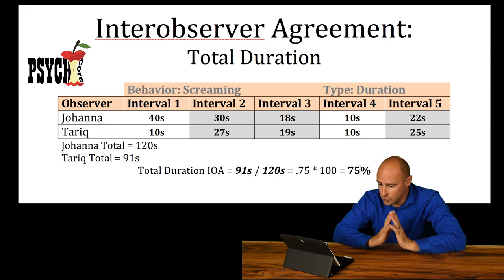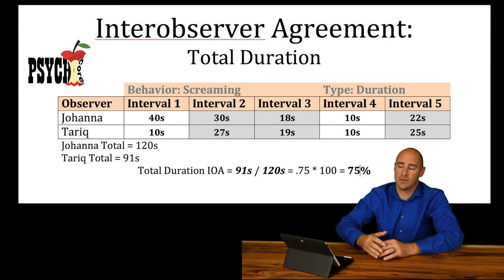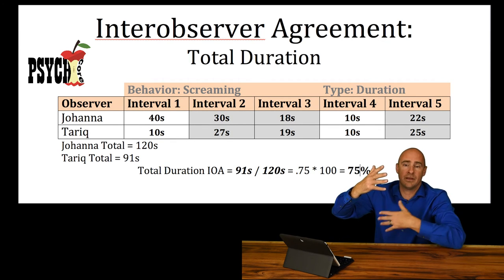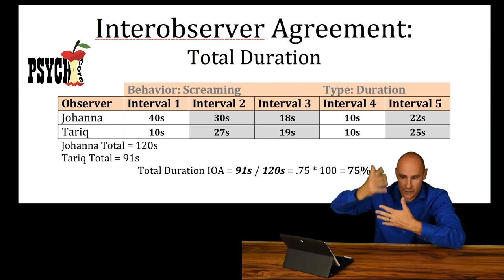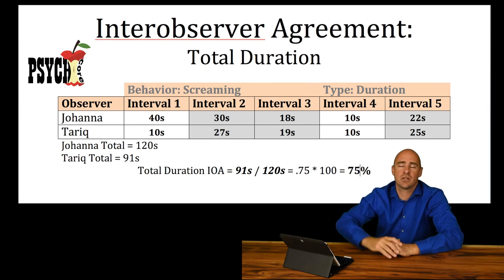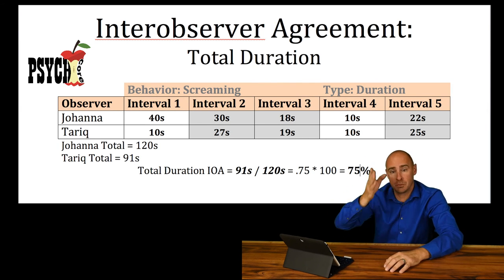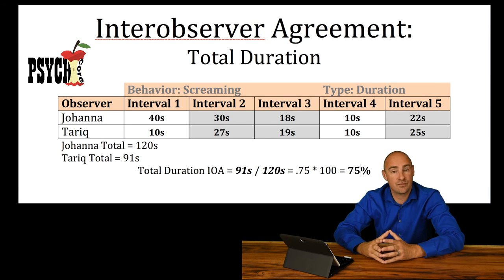So again, total duration — you're just taking the shortest duration divided by the longest duration, the total durations between the two observers. The shortest one divided by the longest one gets your ratio; multiply by 100, you've got yourself a percentage of agreement. Not that it's very accurate.